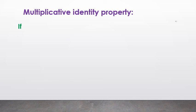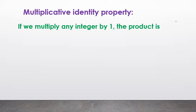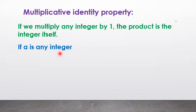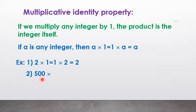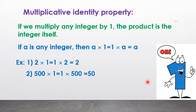Multiplicative identity: if we multiply any integer by 1, the product is the integer itself. If a is any integer, then a × 1 = 1 × a = a. For example, 2 × 1 = 1 × 2 = 2. Another example, 500 × 1 = 1 × 500 = 500. So 1 is the multiplicative identity of integers.